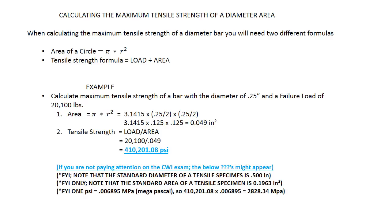Example: Calculate maximum tensile strength of a bar with a diameter of 0.25 inches (250 thousandths) and a failure load of 20,100 pounds.